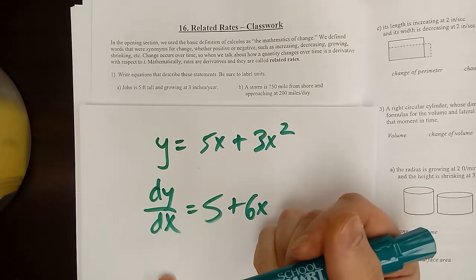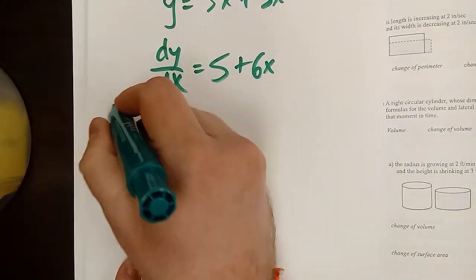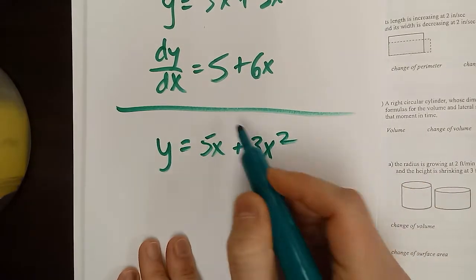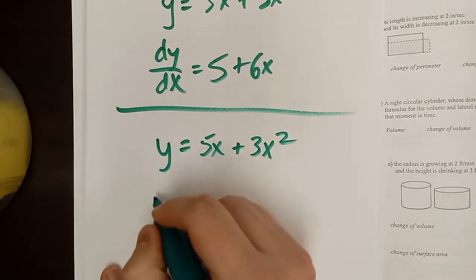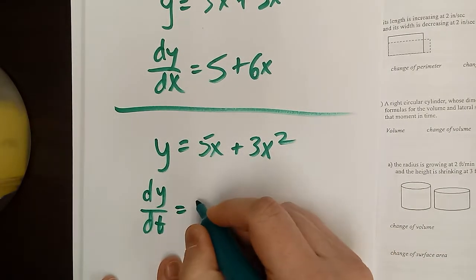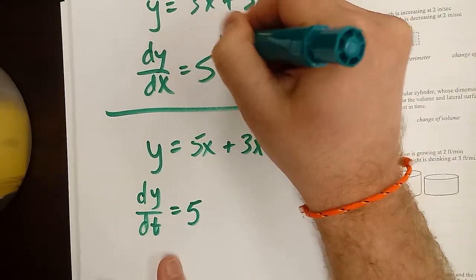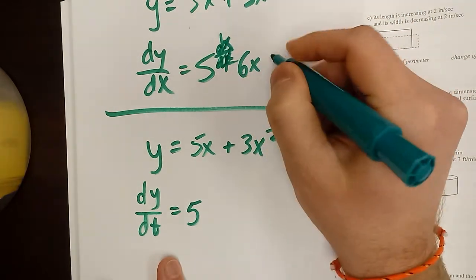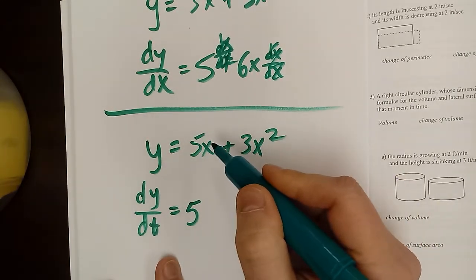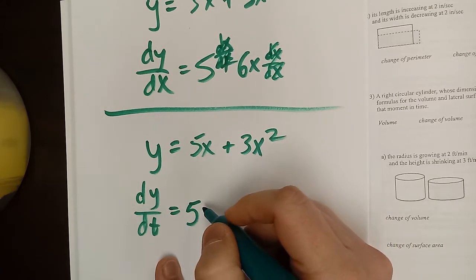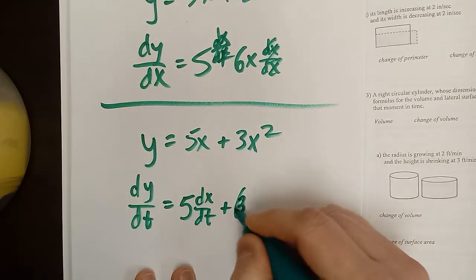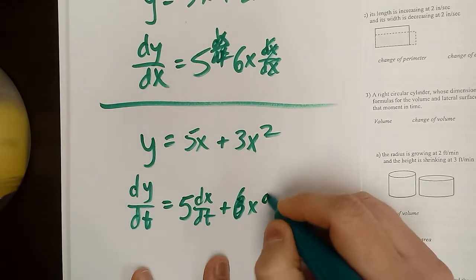Now we're going to be taking derivatives with respect to time. So if I was going to take Y = 5X + 3X² and take the derivative with respect to time, instead of writing dY/dX I would call this dY/dT. This would no longer just be 5, because up in the previous example this was actually a 5 · dX/dX, but the dX/dX canceled. Now I get a 5 · dX/dT that pops out, and here with the 6X term I get a dX/dT that pops out.